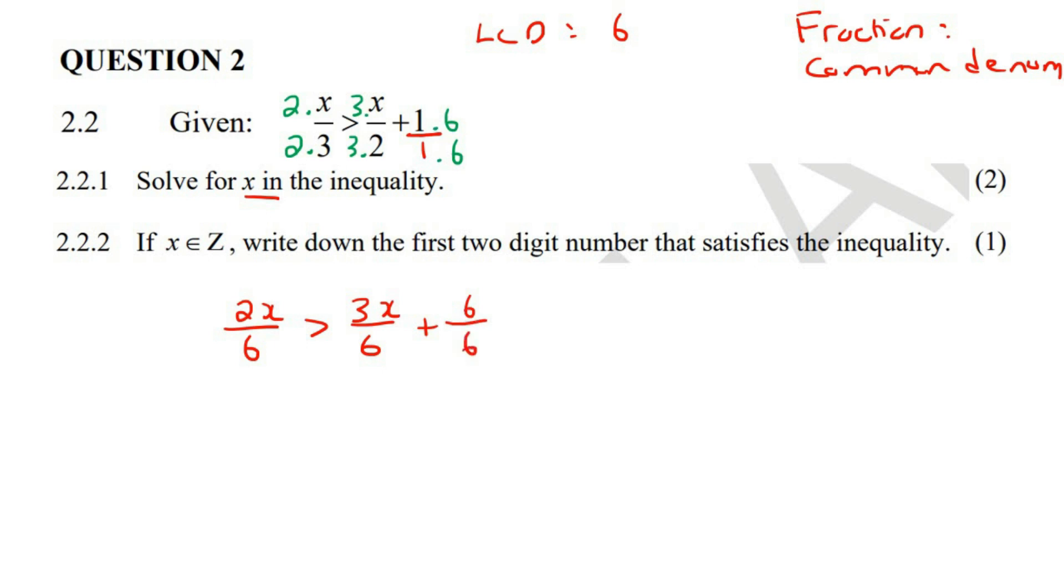Now, when you are busy with equations, inequalities, where you've got an equal sign or if you've got an inequality sign, if your denominators have the same number at the bottom, you can get rid of that. So you then end up with 2x is greater than 3x plus 6, and now it's just a matter of solving.